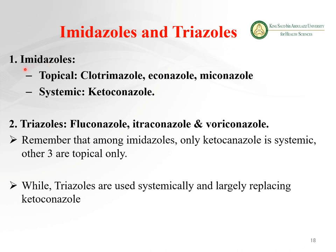Imidazoles are mostly used topically because they are degraded by gastric enzymes. The only imidazole that can be used for systemic administration is ketoconazole. Others — clotrimazole, econazole, miconazole — are used for topical infections only. Triazoles such as fluconazole are used systemically, as they are resistant to degradation by gastric enzymes, and are largely replacing ketoconazole.